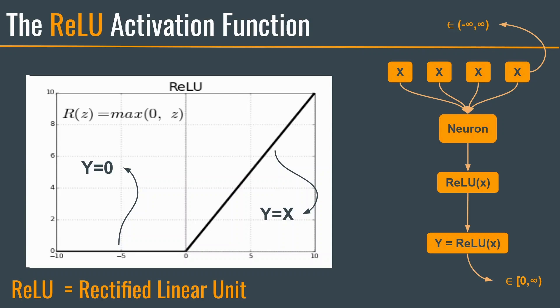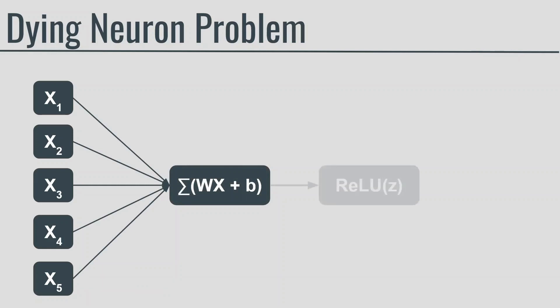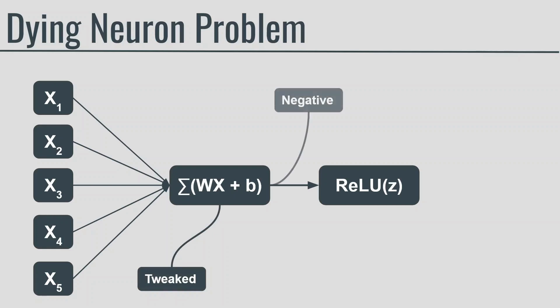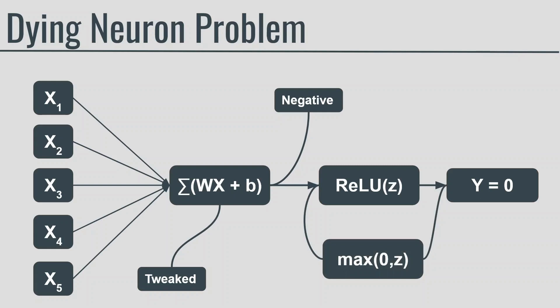ReLU is the tradition, but unfortunately, it is not perfect. It suffers from the dying neuron problem. That is, the neuron keeps outputting 0. Let's have a look at this. Consider you have some set of inputs. These inputs are fed to the neuron, which performs the weighted sum and passes the output to the ReLU activation function. Now, a dying neuron problem occurs when the gradients are tweaked in such a way that the neuron keeps outputting negative values. Thus, when negative values are passed to the ReLU activation function, it always outputs 0. Because ReLU is the max of 0 or z, and whenever the input is negative, the output will always be 0. This is how the neuron dies.